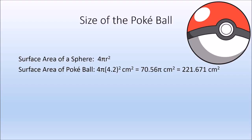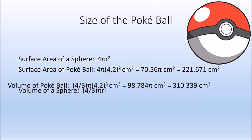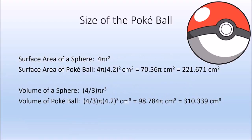We're more interested in how much space is inside, so let's look at the volume of the sphere — the Pokéball. The volume of a sphere is 4/3 πr³. So the volume of a Pokéball is 4/3 × π × 4.2³ cubic centimeters, giving us approximately 310.339 cubic centimeters. For something you want to fit in your pocket, 310 cubic centimeters makes sense — it should fit in your pocket, your hand, or on a belt.